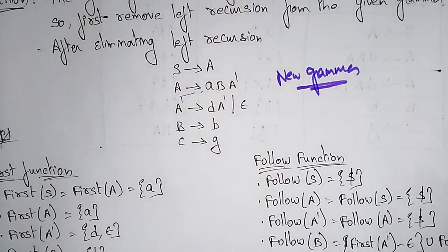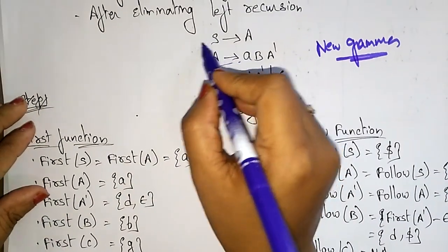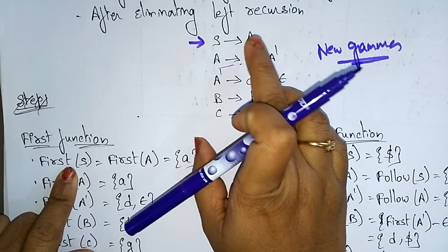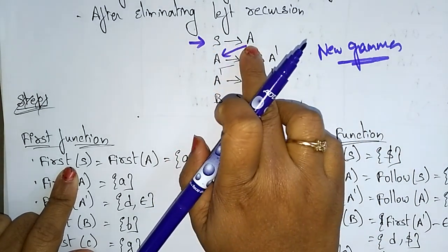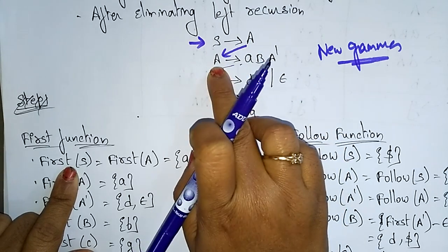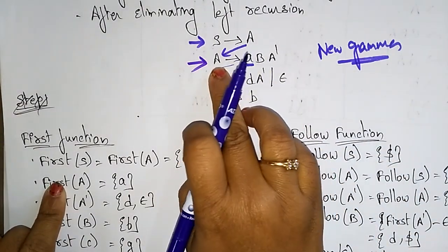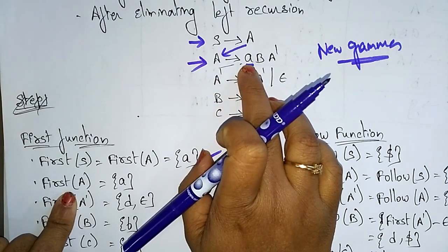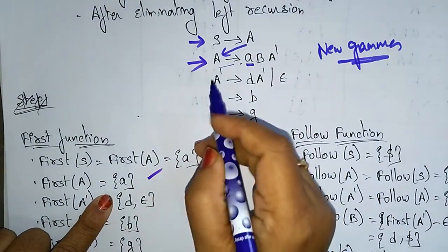The first step is to calculate the FIRST function. For FIRST(S): S → A, which is a non-terminal, so we go to A. FIRST(A) — there is a terminal 'a' directly, so FIRST(S) = {a}. For FIRST(A): the first terminal is 'a' directly, so FIRST(A) = {a}. If there is no terminal in the first position, you take the FIRST of that production again.